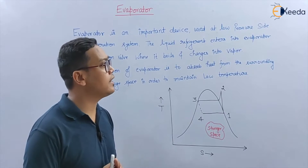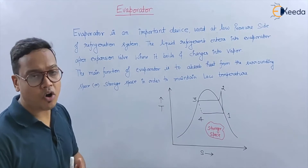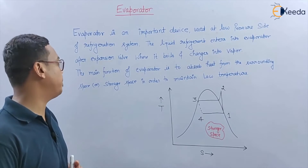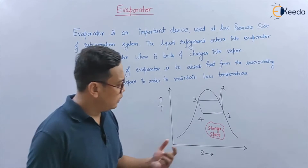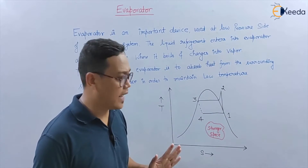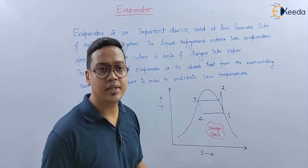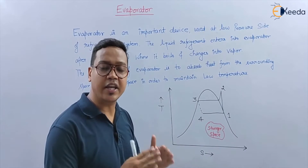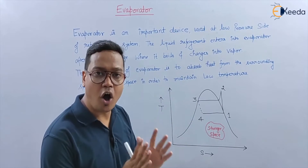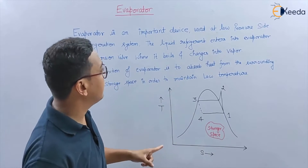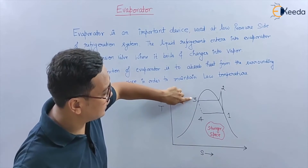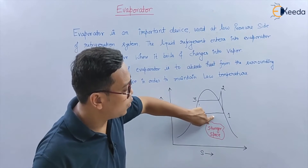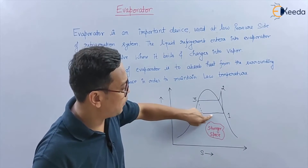The liquid refrigerant enters into the evaporator after the expansion valve, where it boils and changes into vapor. In the simple vapor compression cycle, the process 4 to 1 is happening in the evaporator, and 3 to 4 is the process happening in the expansion valve. So the liquid refrigerant enters at point 4 into the evaporator.